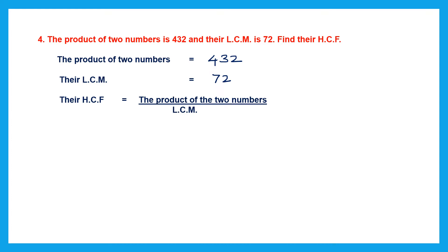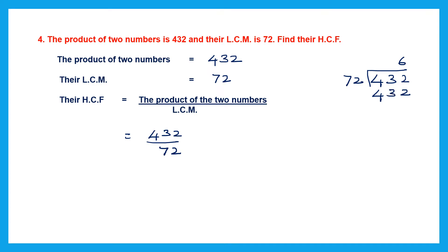The formula to find the HCF is the product of the two numbers divided by LCM — that means 432 divided by 72. Let's divide: 72 into 6. 6 twos are 12, carry 1. 6 sevens are 42, plus 1 is 43. The remainder is 0, so 432 divided by 72 is 6. The HCF of the two numbers is 6.